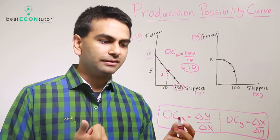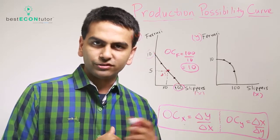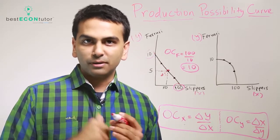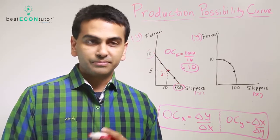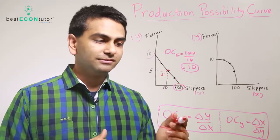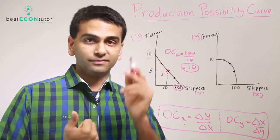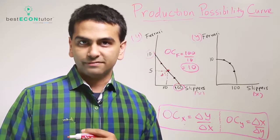One thing you might notice here is the cost of good X is simply change in Y over change in X. That formula might be familiar from math class, from algebra. That's the slope. The slope of the line of the PPF is simply the opportunity cost of the X axis good, and the opportunity cost of the Y axis good is the reciprocal of that.